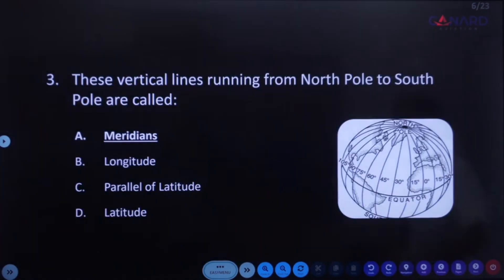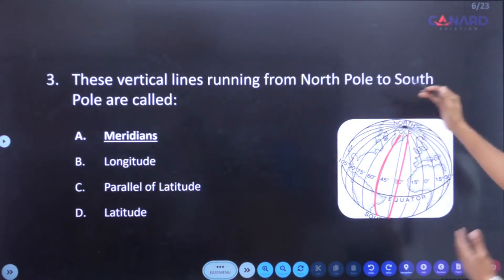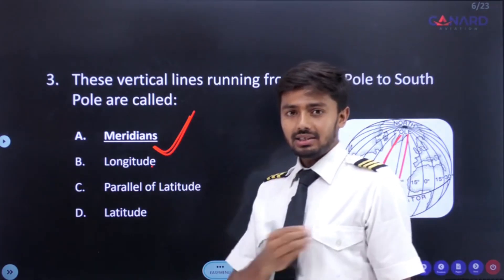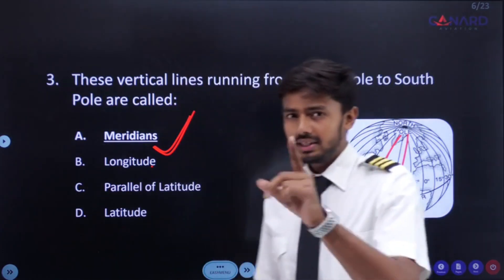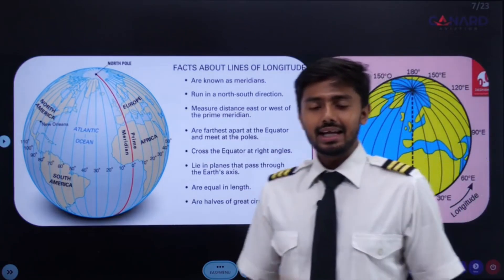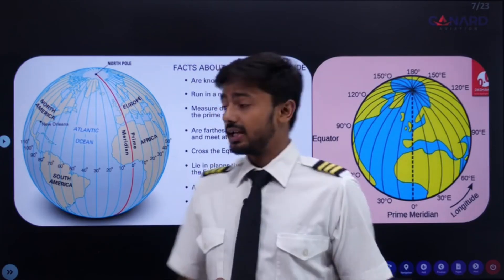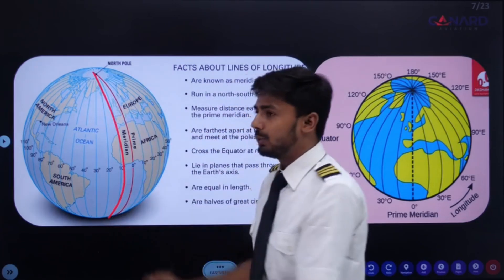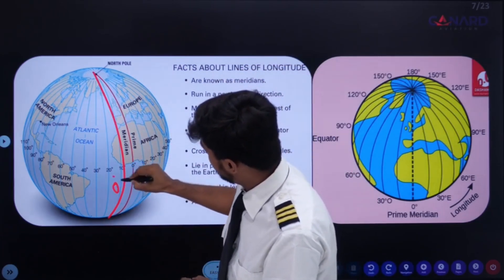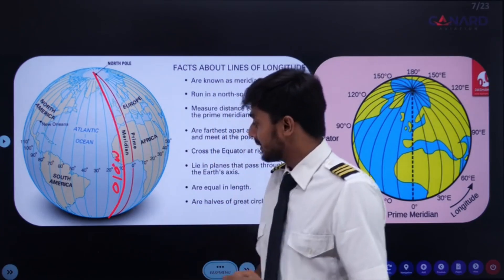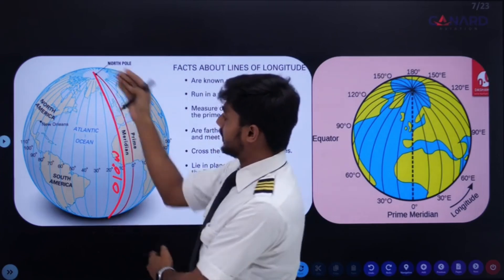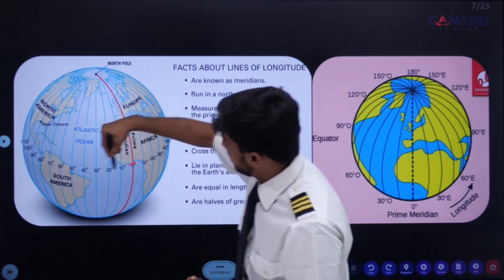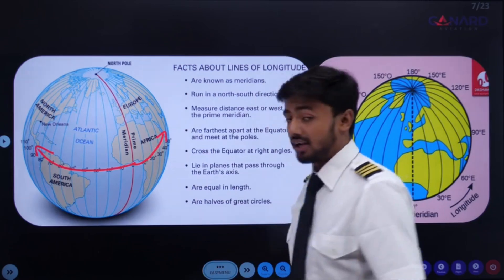Next question: these vertical lines running from North Pole to South Pole are what? These vertical lines are meridians — these are not longitudes. These lines may also be called lines of longitude, but they are not longitude itself. Meridians are the locus connecting points of equal longitude. If you travel along this line, you'll be following 010 degrees west longitude. Meridians run in a north-south direction and measure distance along a west or easterly track.